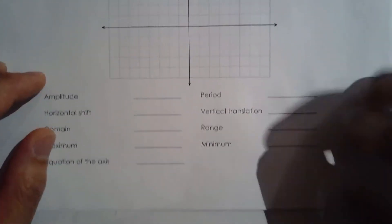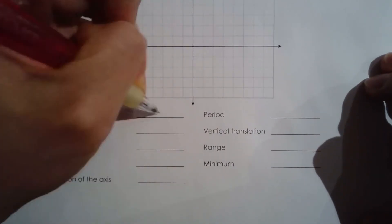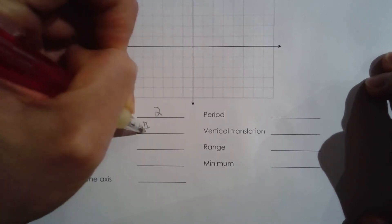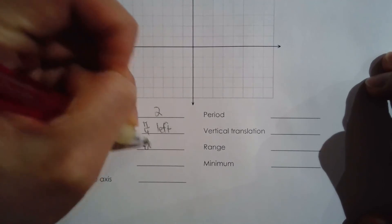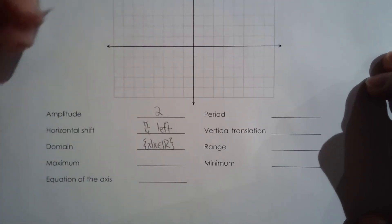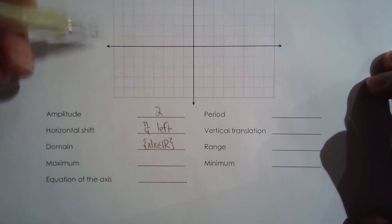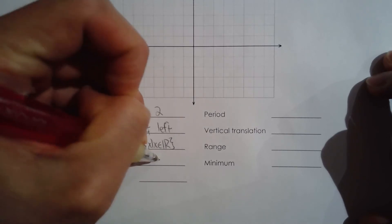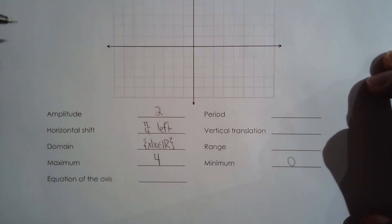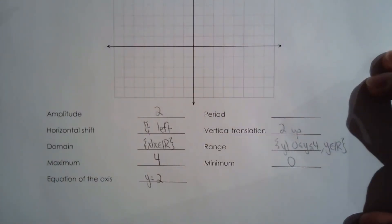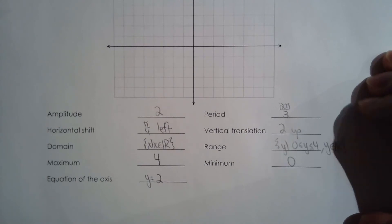For example five, the amplitude is two, the horizontal shift is pi over four to the left, and the domain is all real numbers. The equation of axis is y equals two, so the maximum is two plus two equals four and the minimum is two minus two equals zero. The range is zero to four inclusive, and the period is two pi over three because the function is horizontally stretched by a factor of one third.